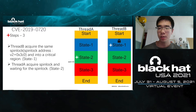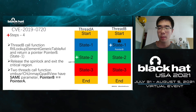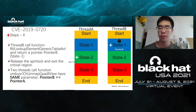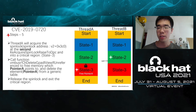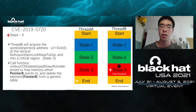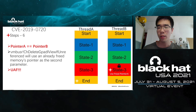Step 4: Thread B calls lookup_element_generic_table and returns pointer B, then releases the spin lock. Because both threads called unmap_gpadl_view with the same parameter, pointer B equals pointer A. Step 5: Thread A acquires the spin lock and invokes delete_gpadl_view_if_unreferenced, freeing the memory pointed to by pointer A and deleting it from the generic table. Thread B is now in state 2 and thread A is in state 3. Step 6: Thread B acquires the spin lock and invokes delete_gpadl_view_if_unreferenced on the already-freed memory pointed to by pointer B. Since pointer A equals pointer B, delete_gpadl_view_if_unreferenced uses the already-freed memory pointer as its second parameter, causing a use-after-free crash.